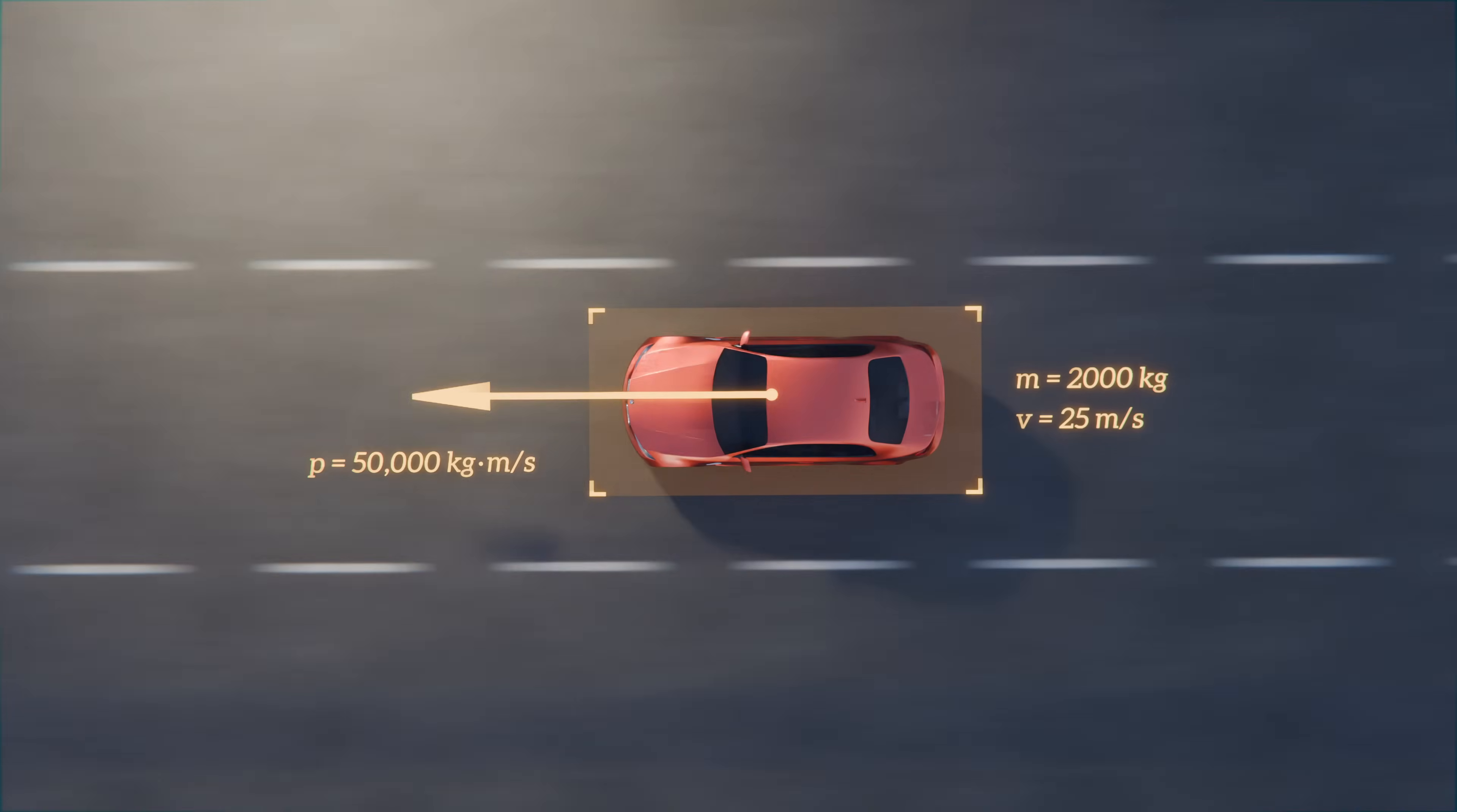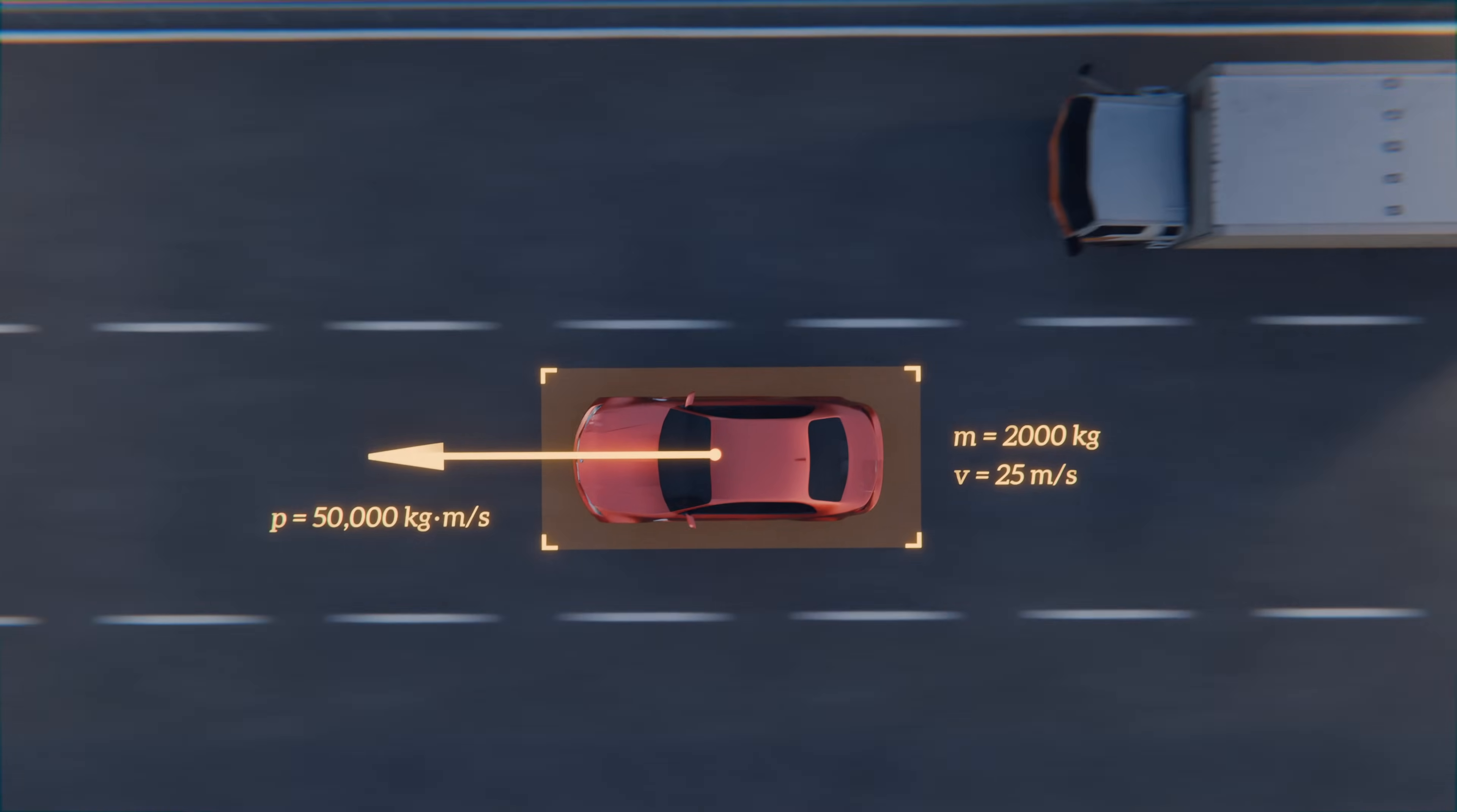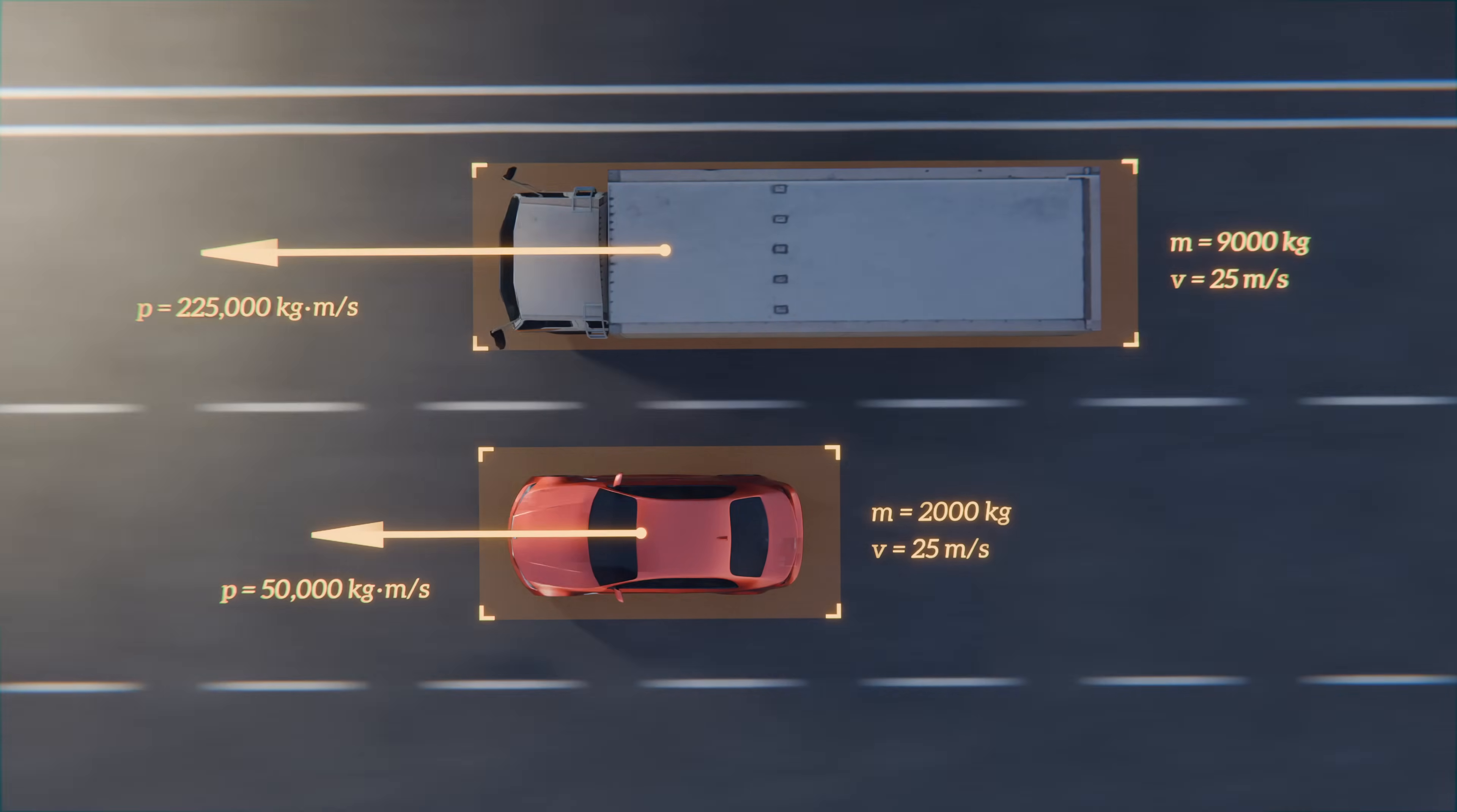You can think of momentum as a measure of how difficult it is to slow down, stop, or change the trajectory of an object in motion. A much heavier truck traveling at the same speed as the car will possess much more momentum, meaning that a much larger force, or the same force but applied over a much longer time period, would need to be applied to stop the truck.